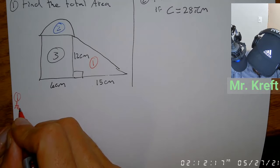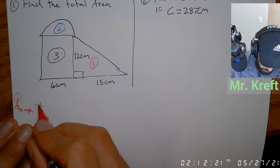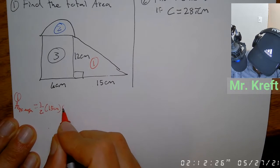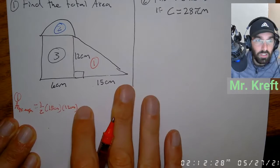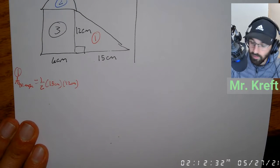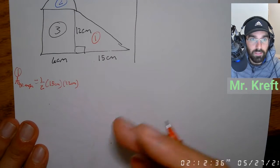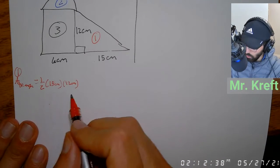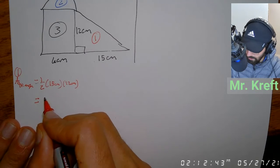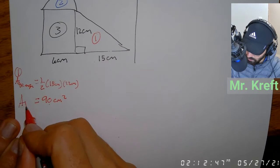For the first shape, that's the area of a triangle, so it's going to be one-half times the base times the height. I'm including units here because we're going to be talking about units a lot today. It's centimeters times centimeters, which is centimeters squared. So I get half of 12 is 6, times 15 — that's 90 centimeters squared.